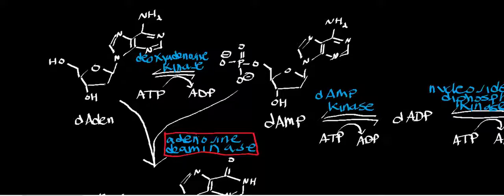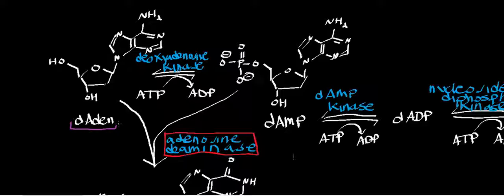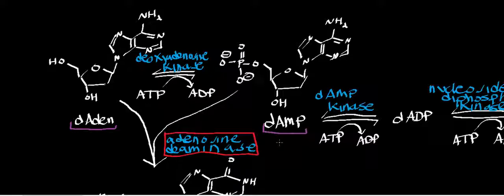Adenosine deaminase can react with deoxyadenosine, which is a simple nucleoside because it doesn't have the 5' phosphate. Adenosine deaminase can also react with deoxyadenosine monophosphate, and of course it can also react with just plain adenosine and adenosine monophosphate. So it has a little bit of leeway in what it reacts with.